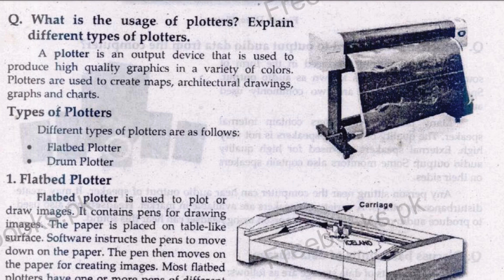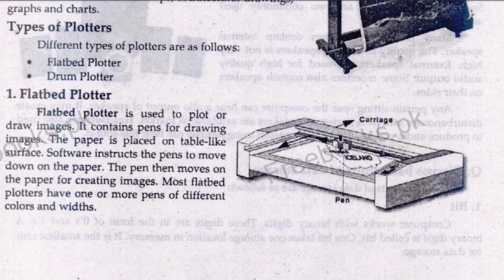A flatbed plotter has a flat table-like surface on which the paper is placed and the plotting is done. The second type, the drum plotter, has a cylinder-type drum which rotates, and you can draw with the pen on top. Now let's look at the flatbed plotter. You can see this graphic — it is a smooth surface on which paper is placed and plotting is done.